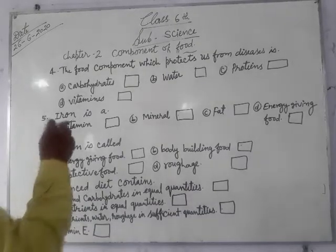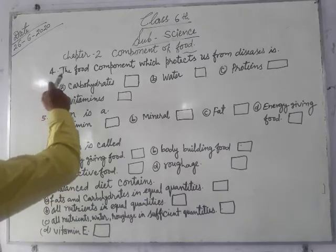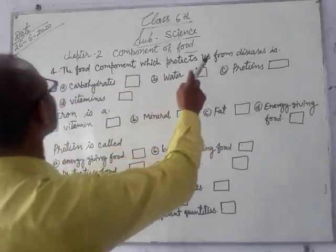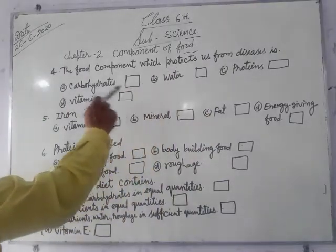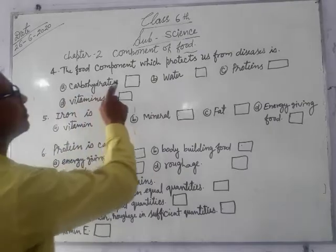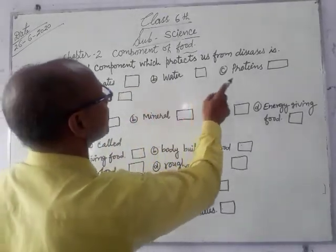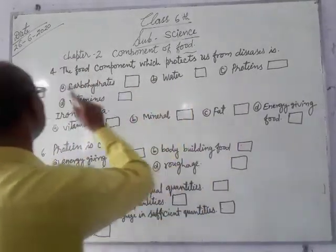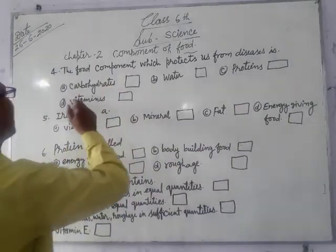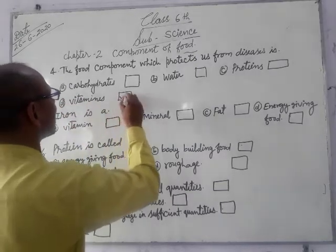Option number 4. The food component which protects us from disease. Option number A: Carbohydrates. Option B: Water. Option C: Proteins. Option D: Vitamins. The correct option is D. Vitamins.